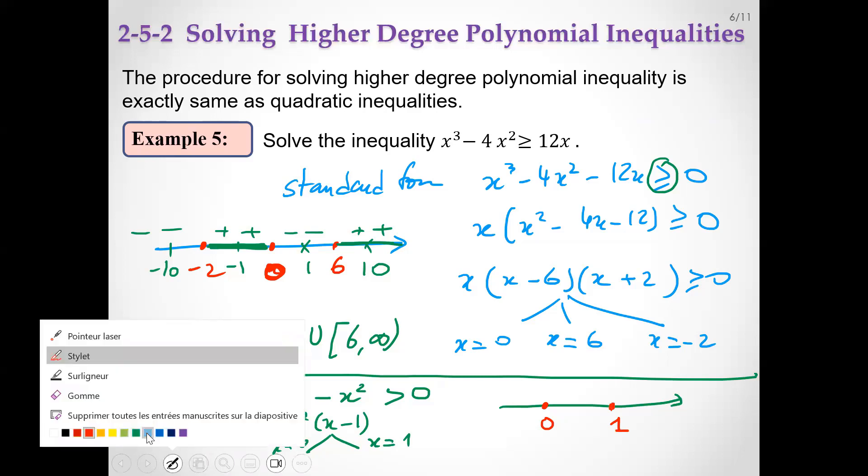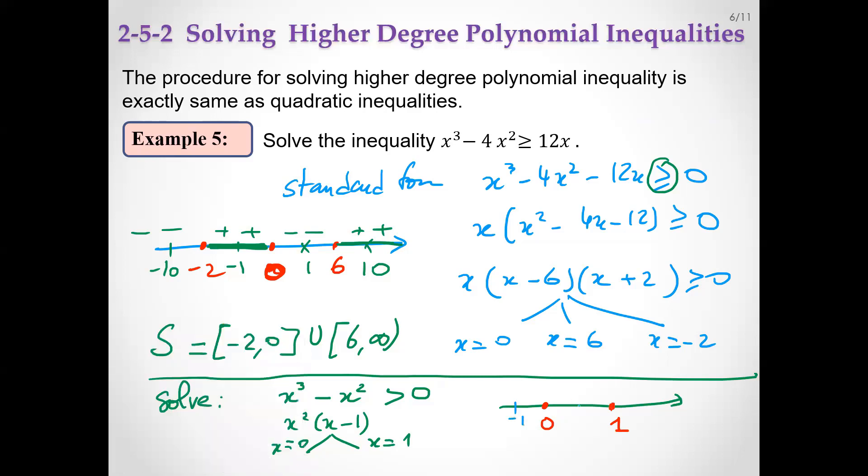Test points: minus 1, half, and 2. We replace. For minus 1, we get minus 1 minus 1 minus 1, minus. For half, 1 over 8 minus 1 over 4, also negative. You see here in this piece and in this piece we keep the same sign, minus and minus. The sign doesn't change always.